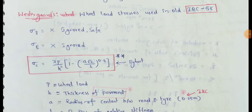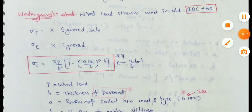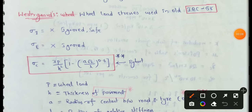Next topic: Westergaard's Equation for Wheel Load in Rigid Pavements. We will discuss rigid pavements. First of all, we have 3 positions in critical wheel load: interior position, edge position, and corner position. We will act on these 3 positions.